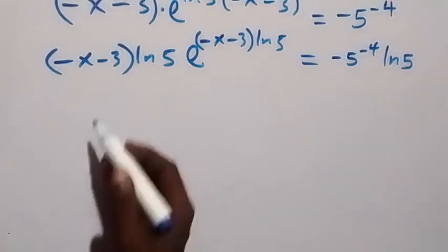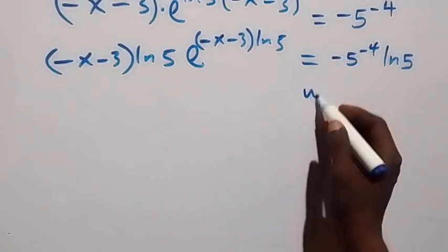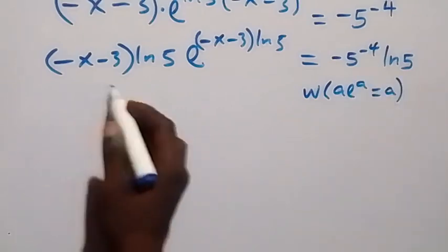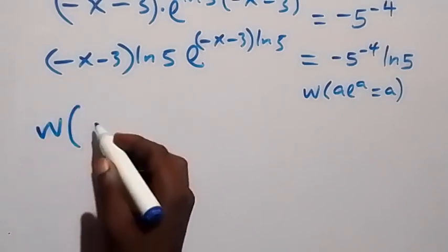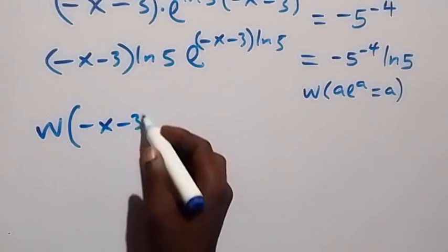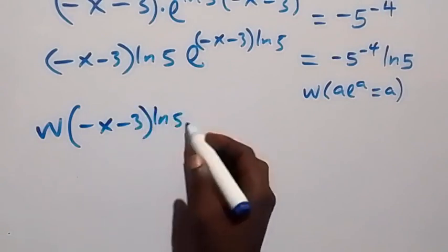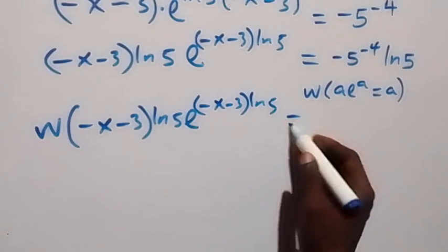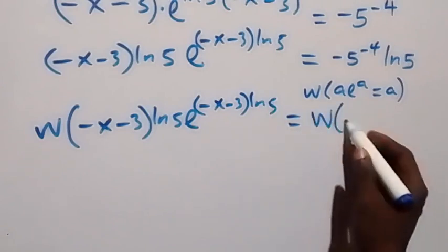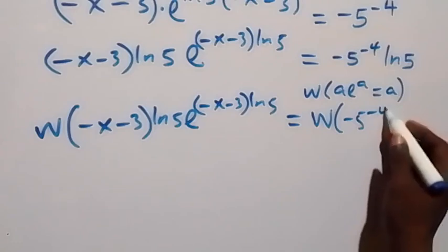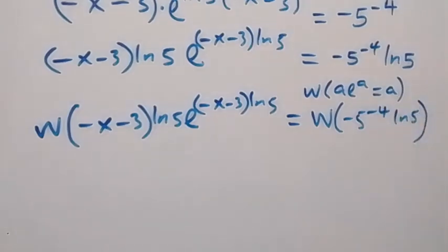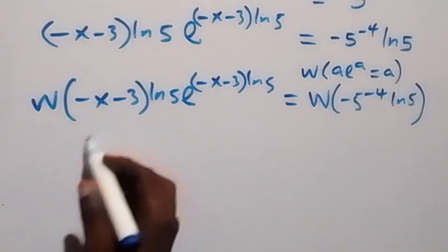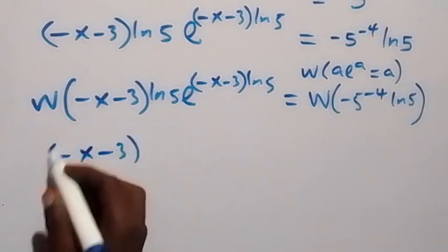From here we can now introduce the Lambert W function on both sides. We have W function of a times exponent a, this is the same thing as a. So that means here, we have W function of minus x minus 3 ln 5, times exponent minus x minus 3 ln 5. On the right side, W function of minus 5 raised to power minus 4 times ln 5. On the left hand side, from here we have W function applied, it reduces to minus x minus 3 ln 5.